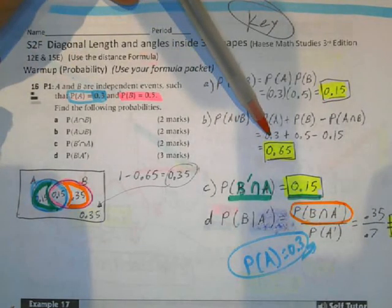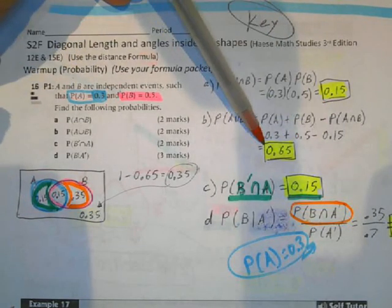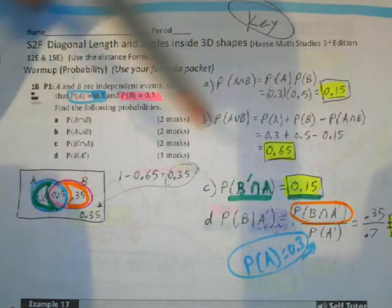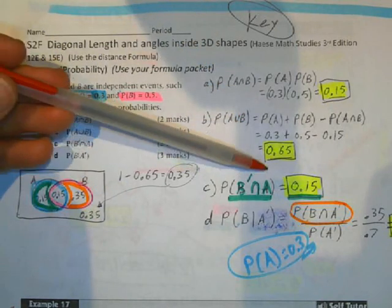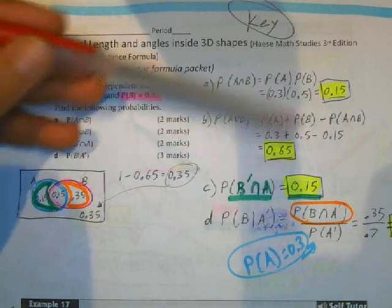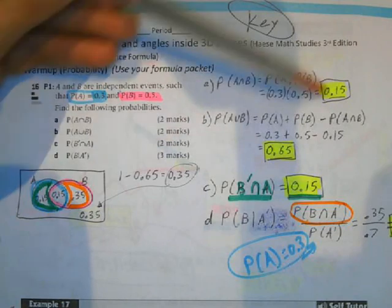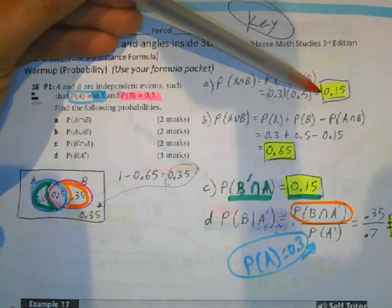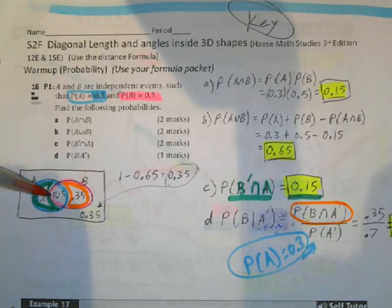So when I figure this out, I end up with 0.65, 65%. So now that I know this information, I can make my Venn diagram. First thing I did was I said, I've got 0.15 as the intersection, so I put 0.15 here in the middle, in the football-shaped section.